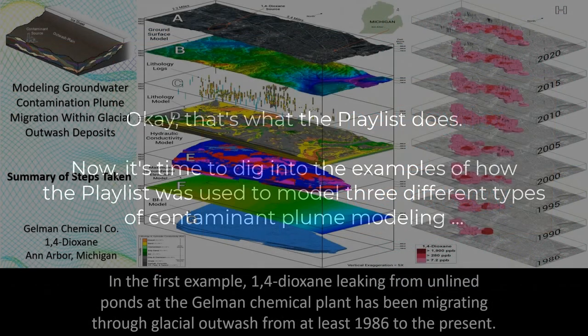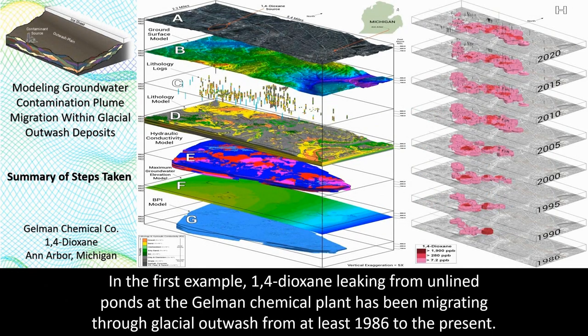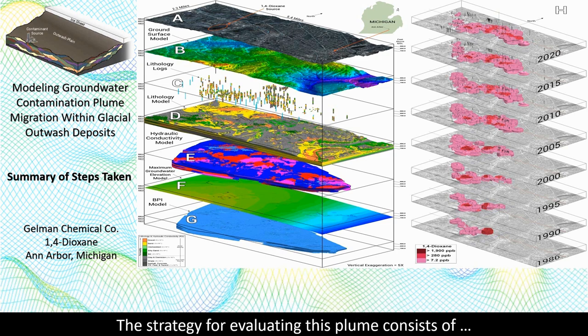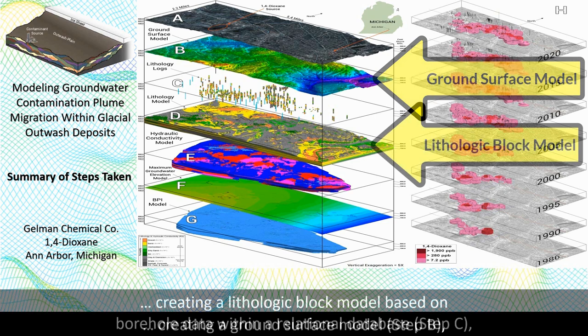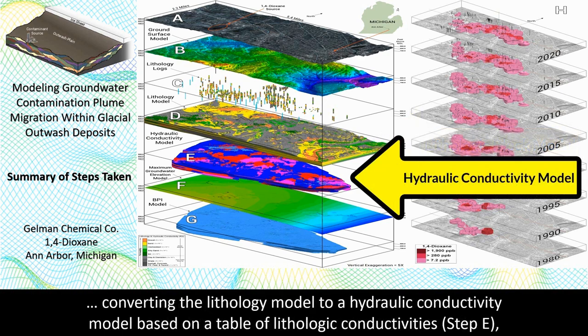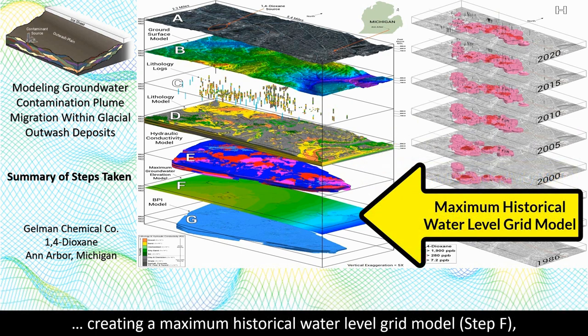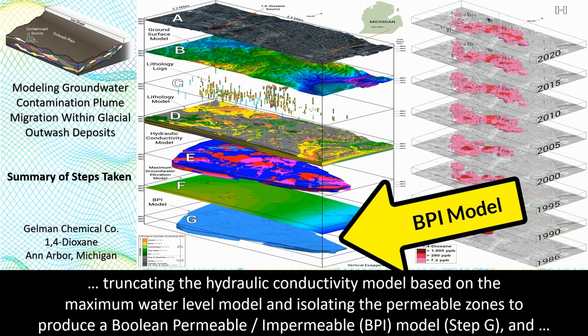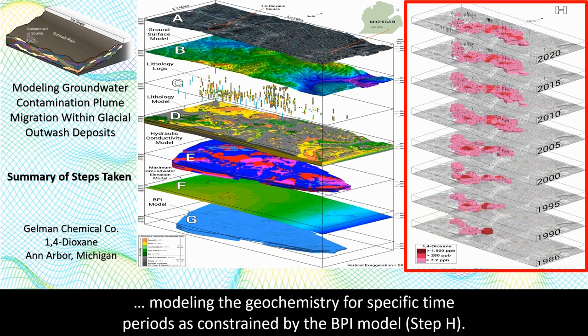In the first example, 1,4-dioxane leaking from unlined ponds at the Gelman chemical plant has been migrating through glacial outwash from at least 1986 to the present. The strategy for evaluating this plume consists of creating a ground surface model, creating a lithologic block model based on borehole data within a relational database, converting the lithology model to a hydraulic conductivity model based on a table of lithologic conductivities, creating a maximum historical water level grid model, truncating the hydraulic conductivity model based on the maximum water level model and isolating the permeable zones to produce a Boolean permeable-impermeable, or BPI model, and modeling the geochemistry for specific time periods as constrained by the BPI model.